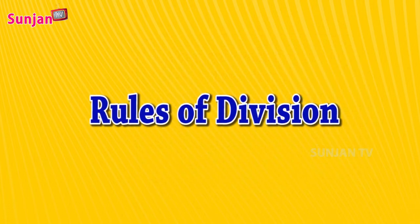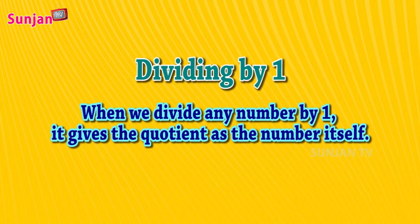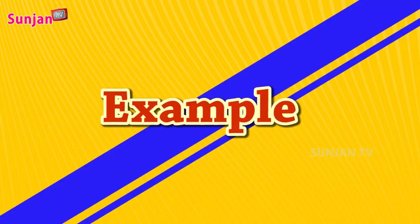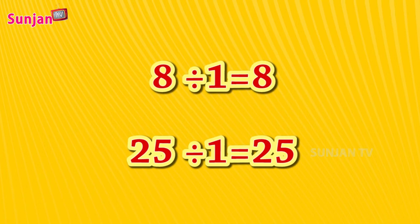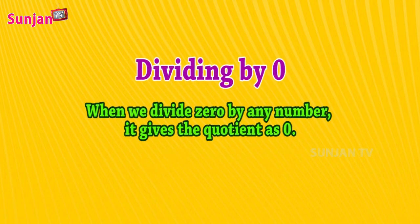Rules of division: Dividing by 1. When we divide any number by 1, it gives the quotient as the number itself. Example: 8 divided by 1 equals 8. 25 divided by 1 equals 25.